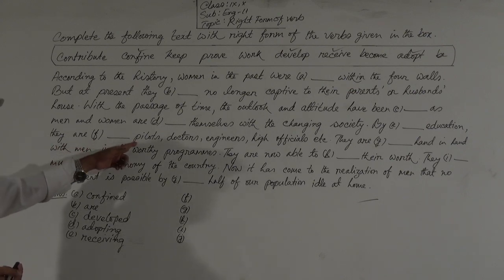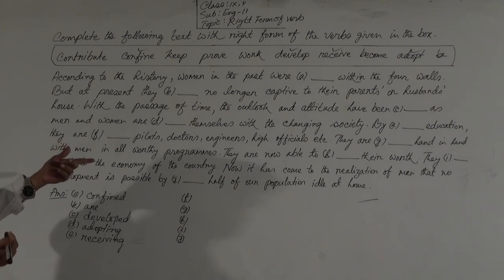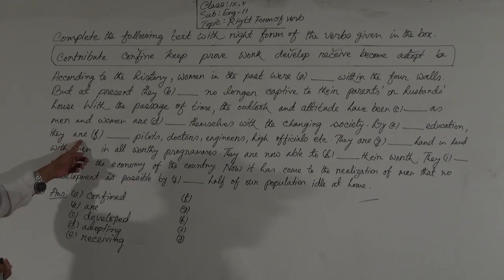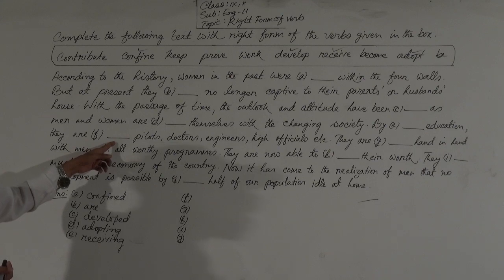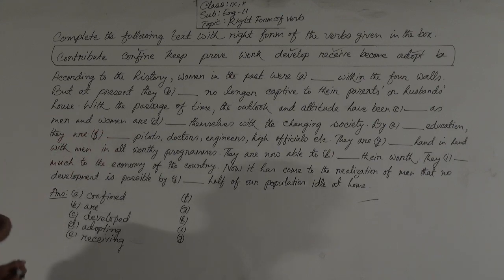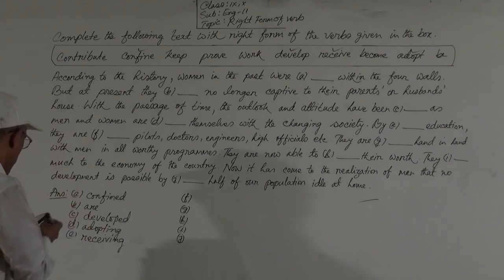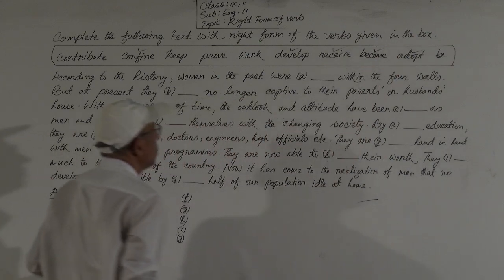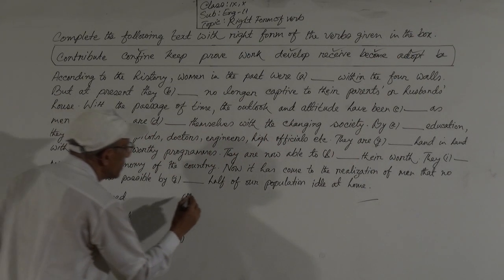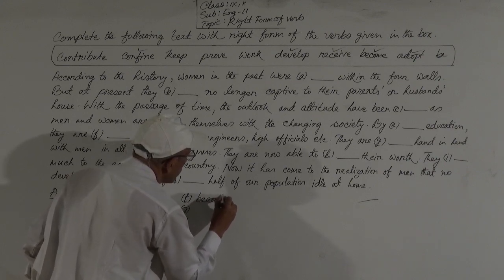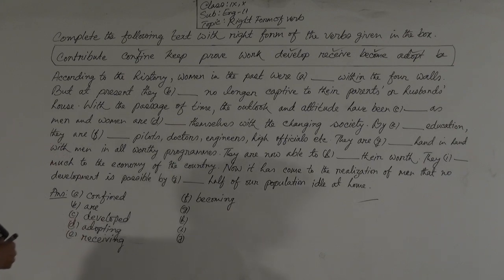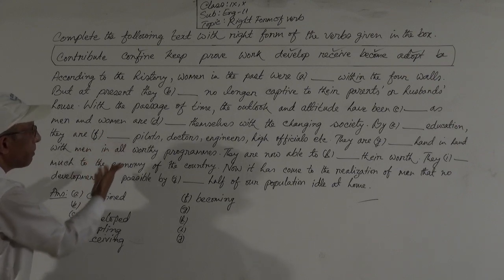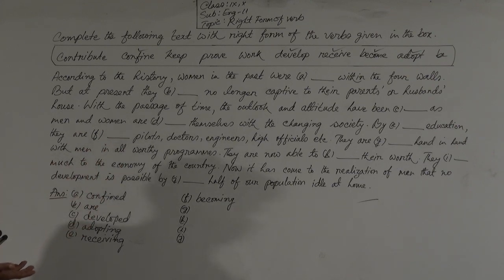By receiving education, they are dashed pilots, doctors, engineers, high officials, etc. This is also present continuous tense — after the be-verb, the verb will be in -ing form. There is a verb 'become' in the box, so 'become' will be 'becoming.' Gap F: they are becoming pilots, doctors, engineers, high officials, etc.